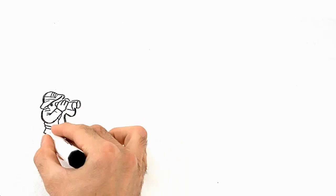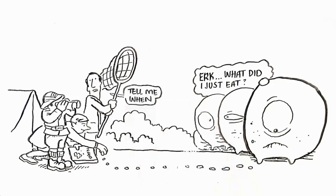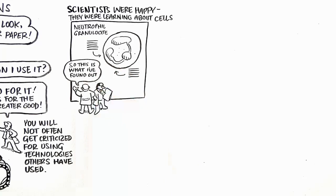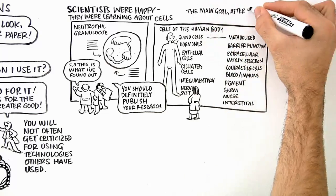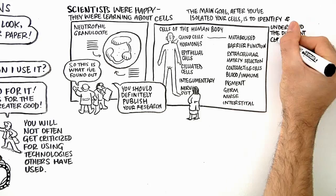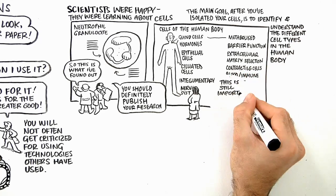For a number of years, cell isolation on the nano-planet has been humming along. Scientists were happy, they were learning about cells, there was easy acceptance to publish. And until recently, this was alright. The main goal after you've isolated your cells is to identify and understand the different types in the human body. This is still important, but priorities have changed.